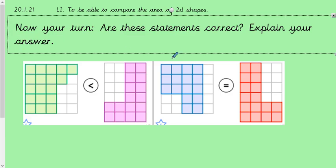Let's move on then for you to have a go. So I have some more questions for you. I want you to have a think about whether these statements are correct to explain your answer. So what you need to do is count the squares to find out the area of both of these shapes and then say whether this is the correct sign.